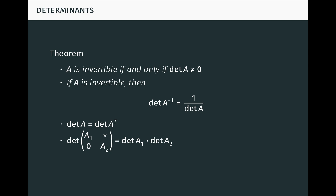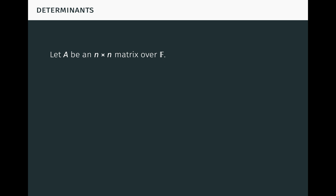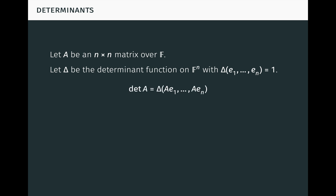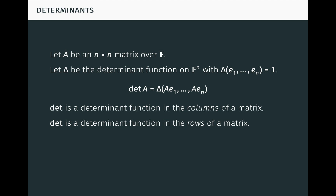Again, let A be an n-by-n matrix over F. There's another important interpretation of the determinant of A. Let δ be the determinant function on F^n with δ(e_1, …, e_n) = 1, where the e's are the standard basis vectors. Then from the definition of the determinant of a linear map, det A equals δ(Ae_1, …, Ae_n). But Ae_1 through Ae_n are just the columns of A. So det can be viewed as a determinant function — that is, a multilinear and alternating function — in the columns of a matrix. Since the determinant of a matrix equals the determinant of its transpose, det can also be viewed as a determinant function in the rows.